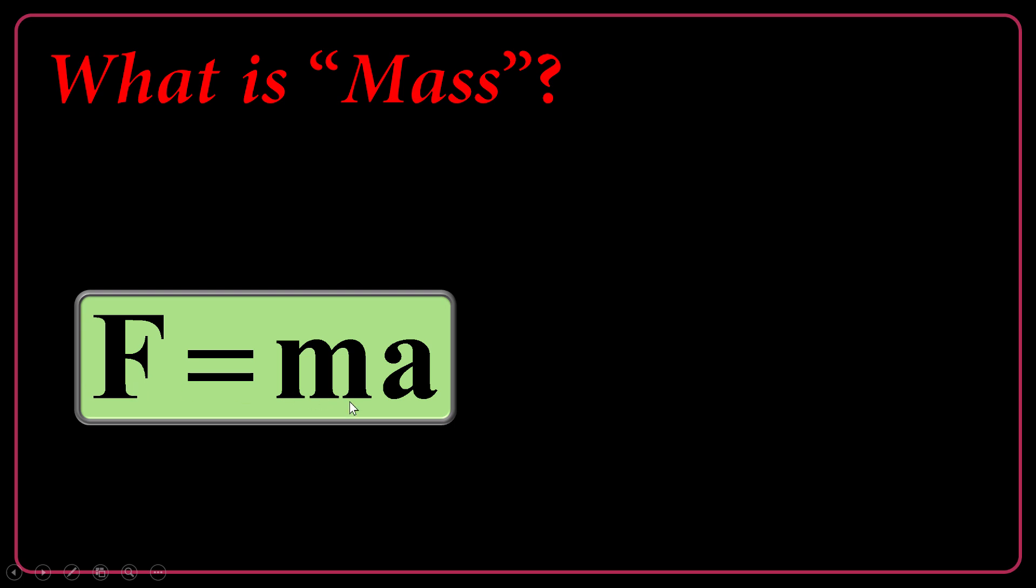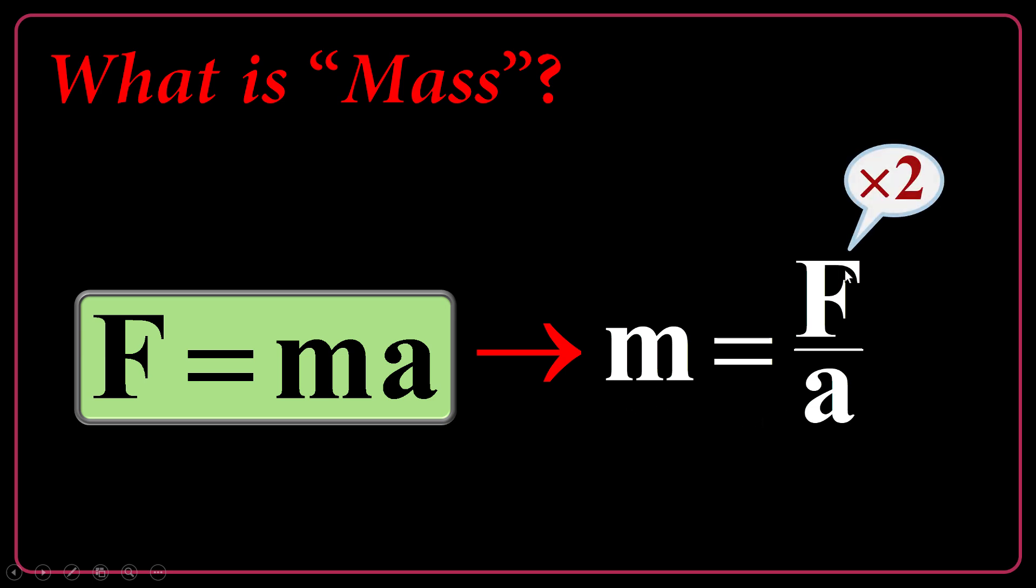Newton did it in a very different way. He said if F equals MA, I can say mass is the quotient of F over A. Actually, if I divide the total resultant force acting on an object by the acceleration, the ratio will be the mass. So if I multiply the force by two, I double the force, the acceleration automatically is doubled. So the mass will be constant. So mass is always the ratio of the force and the acceleration.